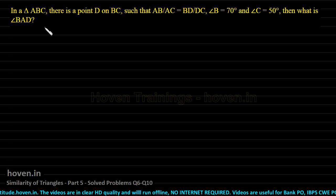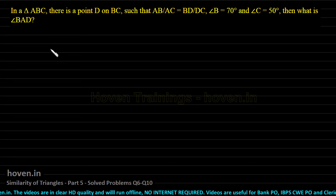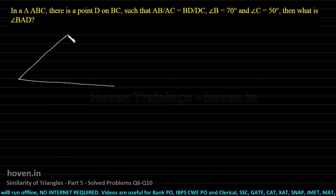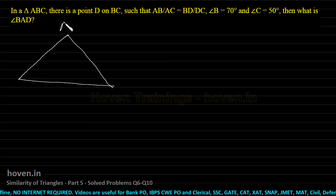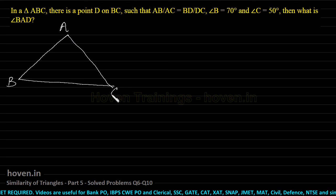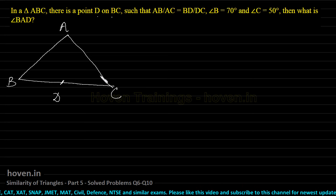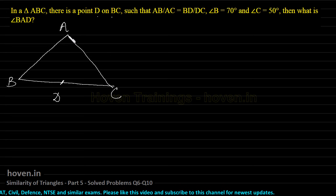We can start by drawing a diagram so that we understand things very clearly. Let this be our triangle ABC with vertices A, B and C. There is a point D on BC such that AB by AC is equal to BD by DC. Let us join these two first of all.